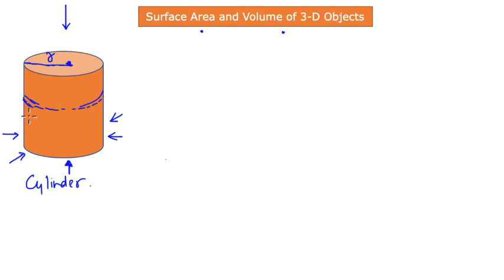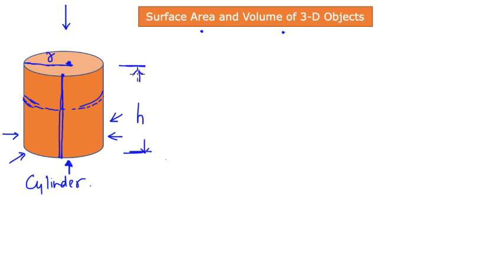Let's do it this way. Let's say we pick any point on this cylinder and we cut a piece of paper such that it has a height exactly equal to the height of this cylinder. If h is the height — the distance from top to bottom — then let's start wrapping this paper around the cylinder along the entire boundary or surface.